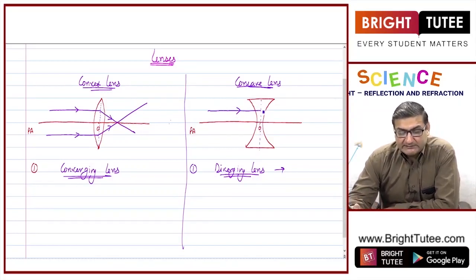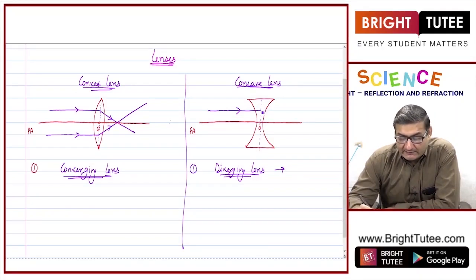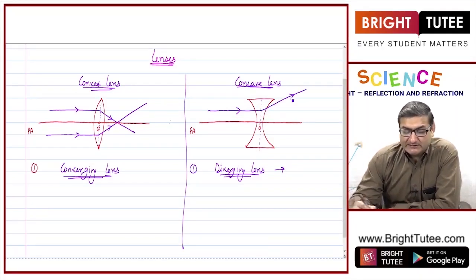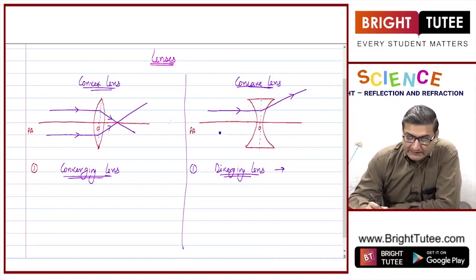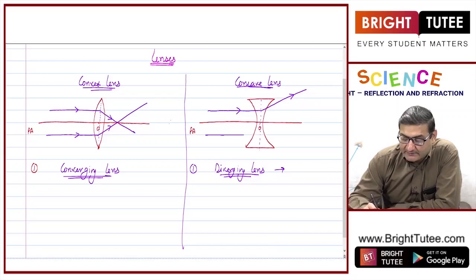After passing through this concave lens, the light ray bends away from the principal axis. The principal axis is below, so the ray goes away from it. Similarly, if a light ray is coming from below, after passing through the lens, it will also go away from the principal axis. This is the concept of divergence.